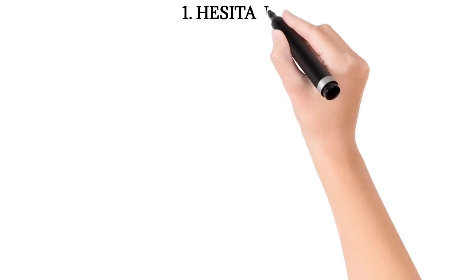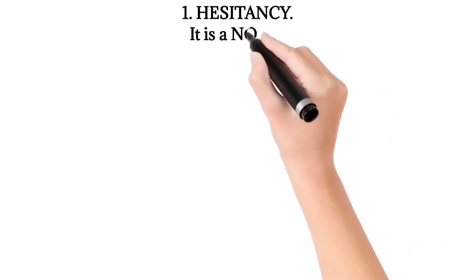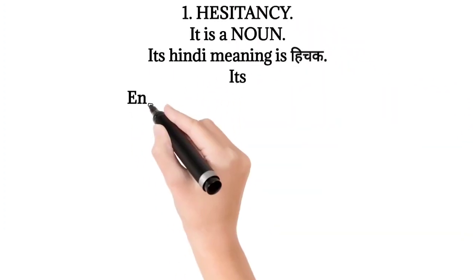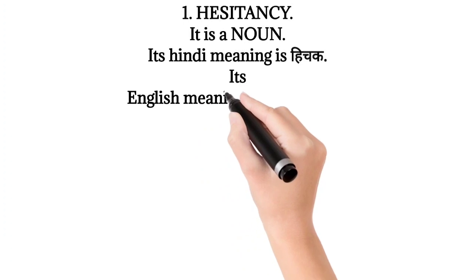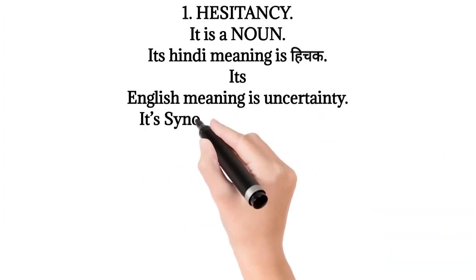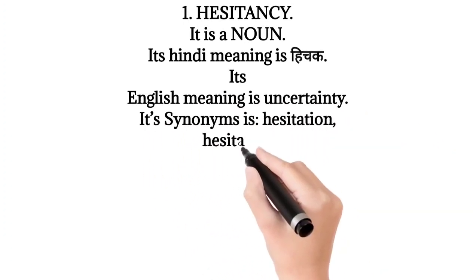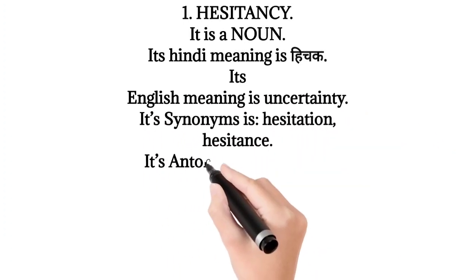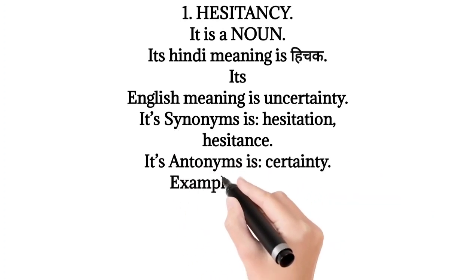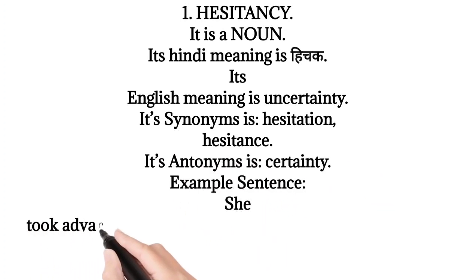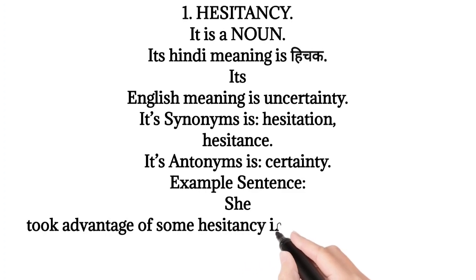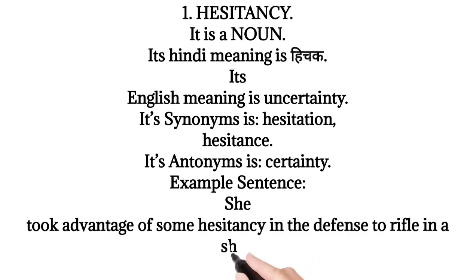1. Hesitancy. It is a noun. Its Hindi meaning is Hitchak. Its English meaning is Uncertainty. Its synonyms are Hesitation, Hesitance. Its antonym is Certainty. Example sentence: She took advantage of some hesitancy in the defense to rifle in a shot.